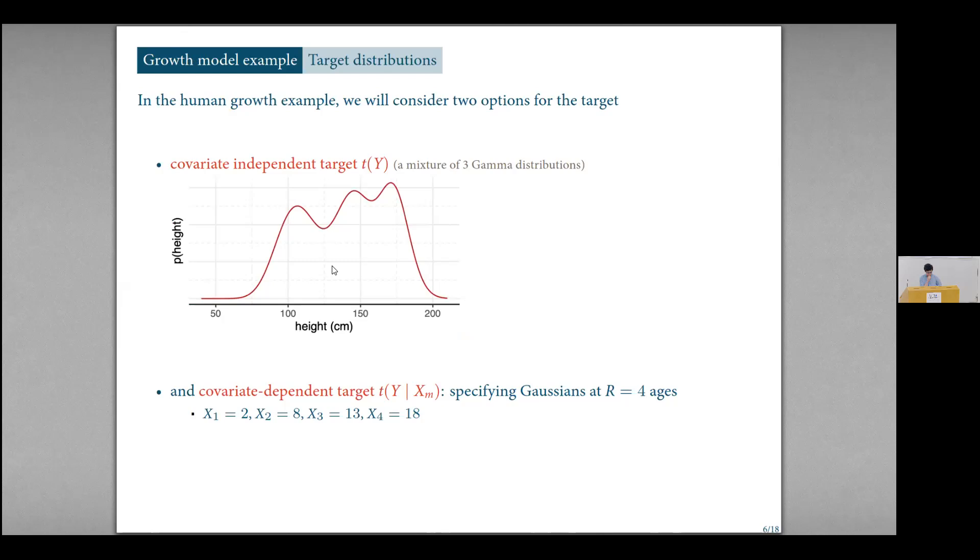So going back to the human growth example, I'm going to consider two different target distributions. I'm going to consider one case where I set r equal to one and that makes the target covariate independent. So I'm not going to depend on x and the marginal distribution I want to fit for that was chosen by using other data to the data that we used to fit the model. In fact, it's a mixture of three gamma distributions. And then I'm also going to consider a covariate dependent target where I have a Gaussian for each of the distribution of heights at four different ages of children.